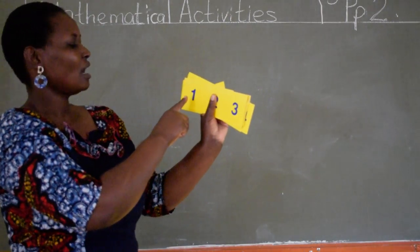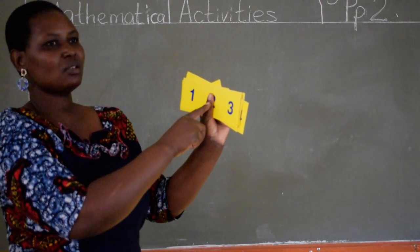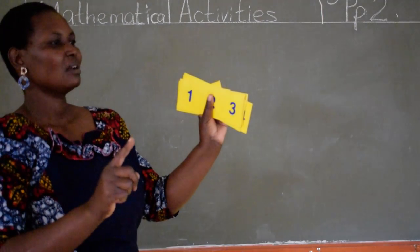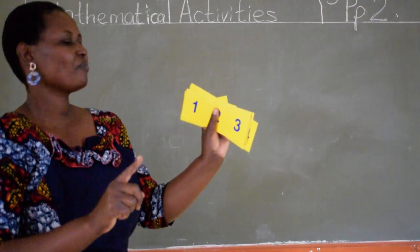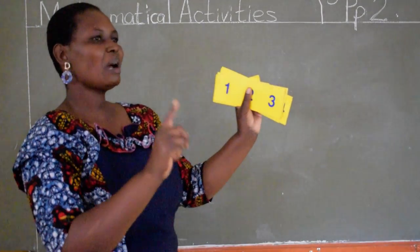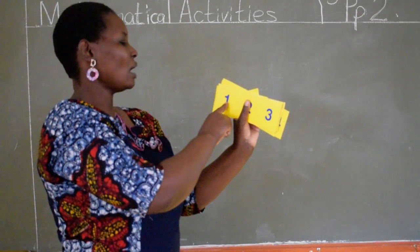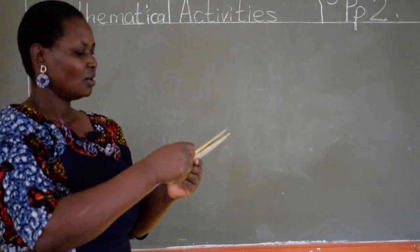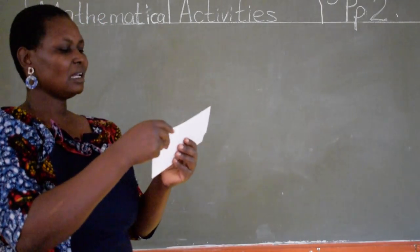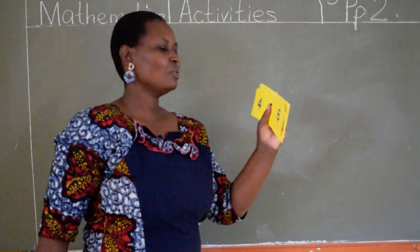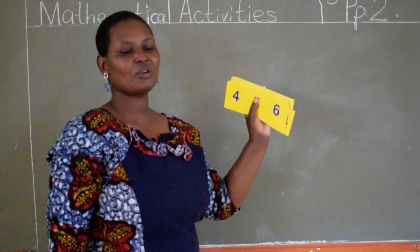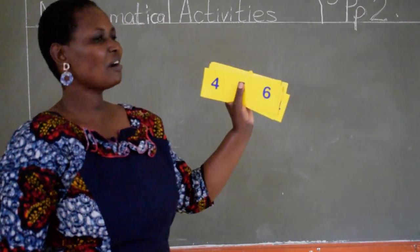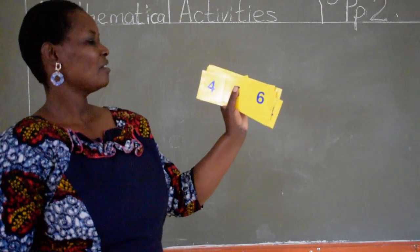So that means after number 1 there is number 2. We are going to write the number after every number. Can you say 'the number after'? So after number 1 there is number 2. Who can tell us which is the number after number 4? Yes, Lerato.